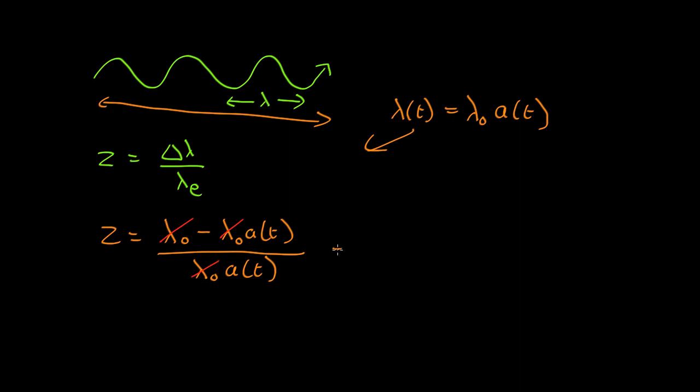So all the lambda noughts cancel, and we find that the redshift is equal to 1 minus a of t, the scale factor, all over a of t.